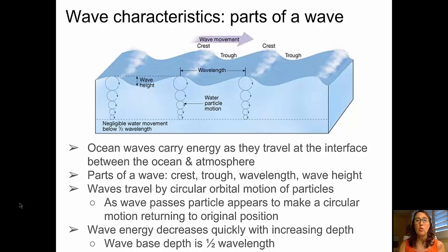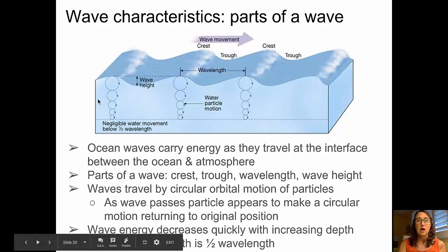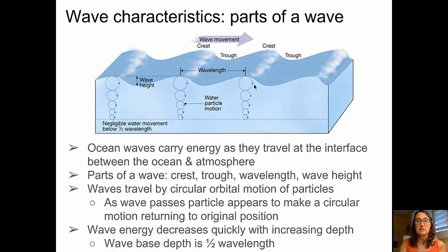We'll start off talking about wave characteristics and the parts of a wave. The diagram at the top of the slide shows the basic parts. We see a wavelength — that's the distance between sequential crests or sequential troughs. The crest is the top, highest portion of the wave, the trough is the lowest portion, and the wave height is the height difference between the top of the crest and the bottom of the trough.